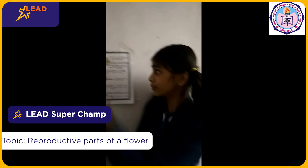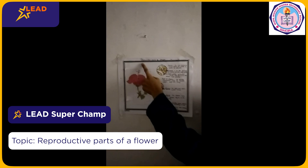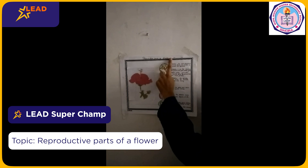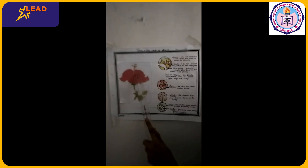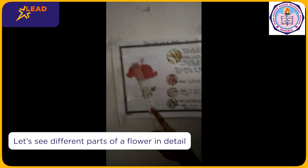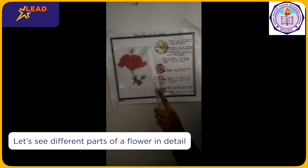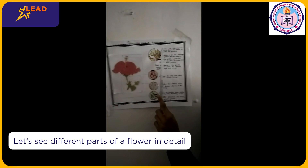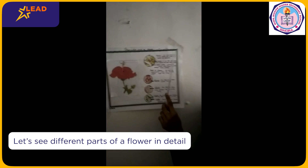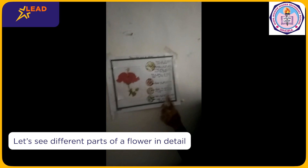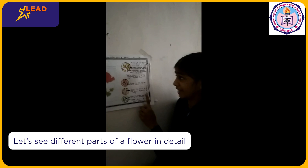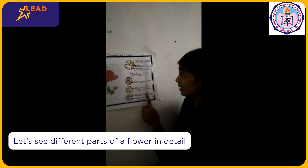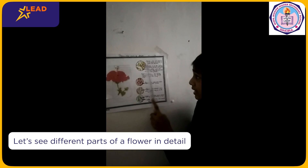Today I teach you the reproduction parts of a flower. This is a flower. This lining part is called the stamen, the main reproductive part of the flower that consists of anther and filament.